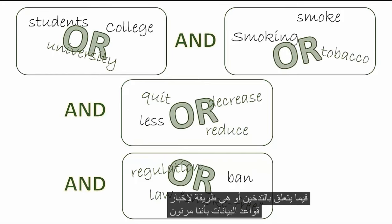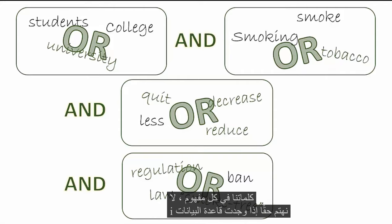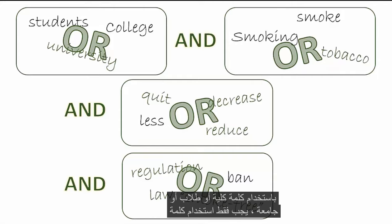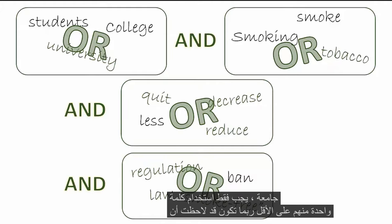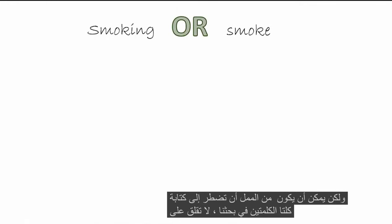OR is the way to tell the databases that we are flexible. We would use OR to combine all or some of our words within each concept. We don't really care if the database finds items using the word 'college' or 'students' or 'university' — it just has to use at least one of them. You may have noticed that some of our words are very similar to each other, like 'smoke' and 'smoking'. In this example, we are OR-ing them together, but it can be tedious to have to type both words out in our search.